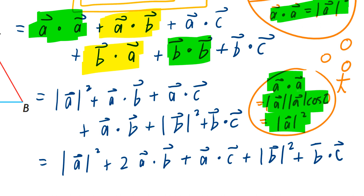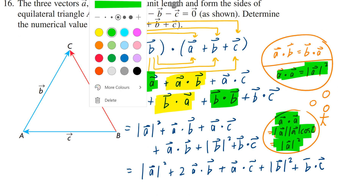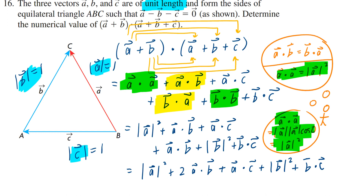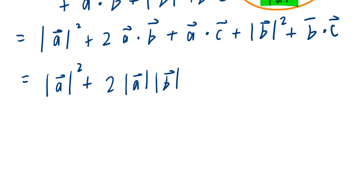Now we're going to use the given information. Each side has unit length, which means the magnitude of a, b, and c are each exactly one. By definition, a dot b equals the magnitude of a times the magnitude of b times cosine of the angle between them. Let's go back to the diagram to identify what those angles are.